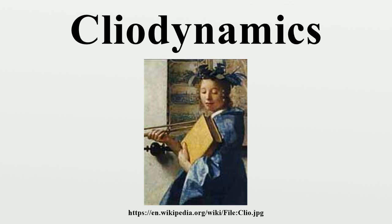Turchin P. 2003, Historical Dynamics: Why States Rise and Fall, Princeton, NJ, Princeton University Press. Turchin P. 2005, War and Peace and War, Plume. Turchin P. 2009, A Theory for Formation of Large States, Journal of Global History 4, 191–217.